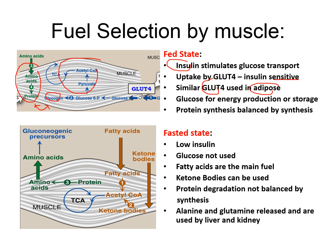During the fasting state, you have very low insulin and therefore the GLUT4 transporter is not activated, so there will be no glucose uptake at all. The muscle will then have to rely on fatty acids as the main fuel molecules. At the same time, muscle will also use ketone bodies imported from the liver for energy production, since both can be converted into acetyl coenzyme A. Because of the low insulin level, muscle will also start to break down protein into amino acids — mainly alanine and glutamine — which can then be used in gluconeogenesis.